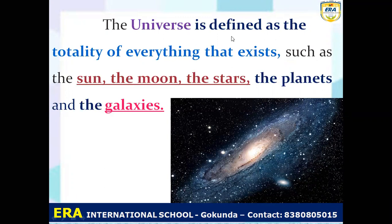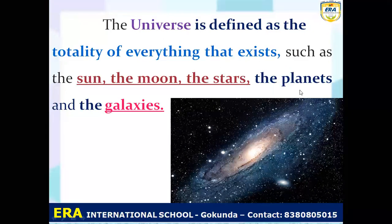Universe is the totality of everything that exists, such as the sun, the moon, the stars, the planets, and the galaxies. In short, the universe is composed of all or everything that exists.